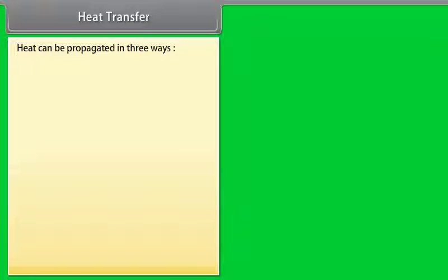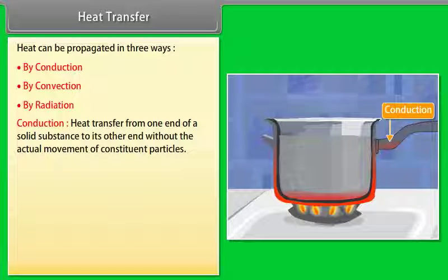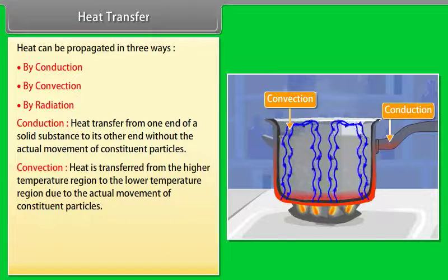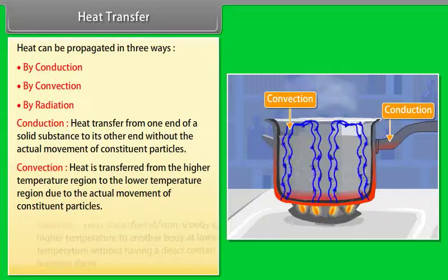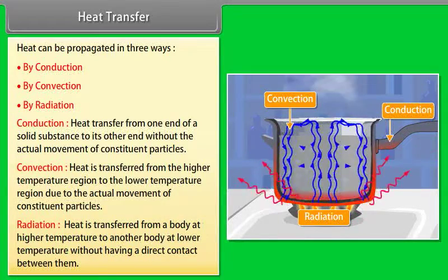Heat transfer: Heat can be propagated in three ways — (1) Conduction: heat transfer from one end of a solid to the other without actual movement of constituent particles; (2) Convection: heat transferred from higher to lower temperature regions due to actual movement of constituent particles; (3) Radiation: heat transferred from a body at high temperature to another at lower temperature without direct contact between them.